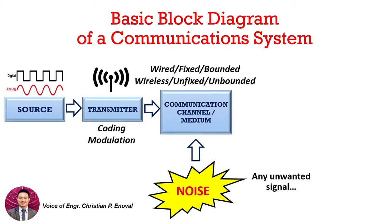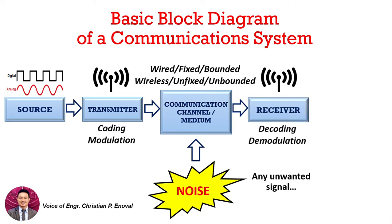What is transmitted over the transmission media will be received by the receiver system. In our receiver system, there are many circuits and devices to make the received signal compatible for the destination. In the transmitter, processes such as coding and modulation are used. The counterpart in the receiver is decoding and demodulation.